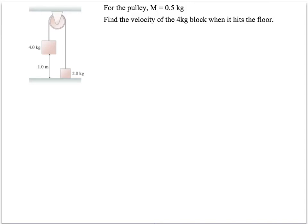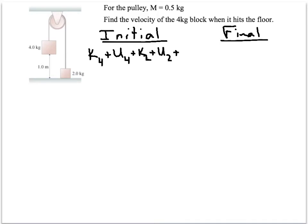Using conservation of energy, we have an initial side of our equation and a final side. Let's go through all the objects. We could have kinetic and potential energy for the 4 kilogram block, plus kinetic and potential energy for the 2 kilogram block, plus kinetic energy of the pulley. Some of these things will be zero, but afterwards we could have all of the same things.